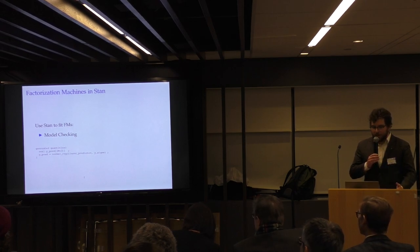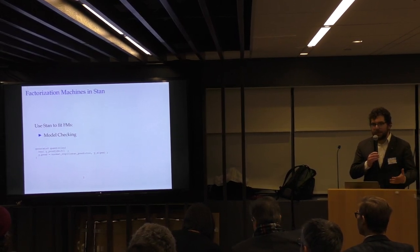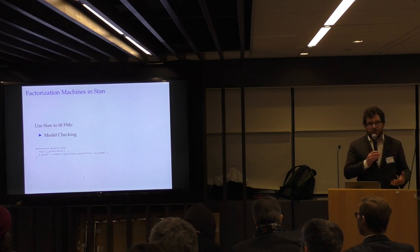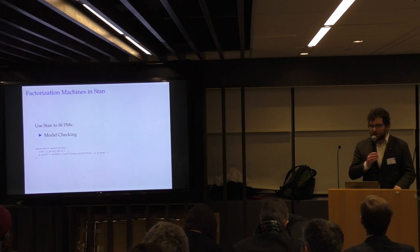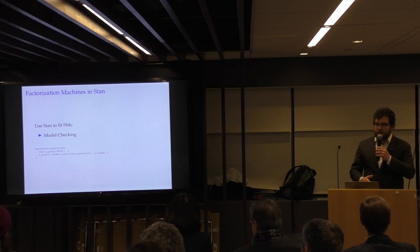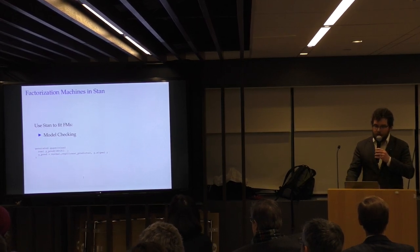So one of the other reasons Stan is great is there's this generated quantities block that you can use for model checking. And what this will do, in this case, what we're going to do is provide it the linear predictor and simulate new outcome data from the model we fit. And so what this does is this provides a way to check that our model fit well. So we'll simulate 1,000 draws from our model for each of our outcome variables. And then we'll take their means. And we can basically look to see how the distribution compares to our real data. And if it looks like it fits well, it should look like our original data.